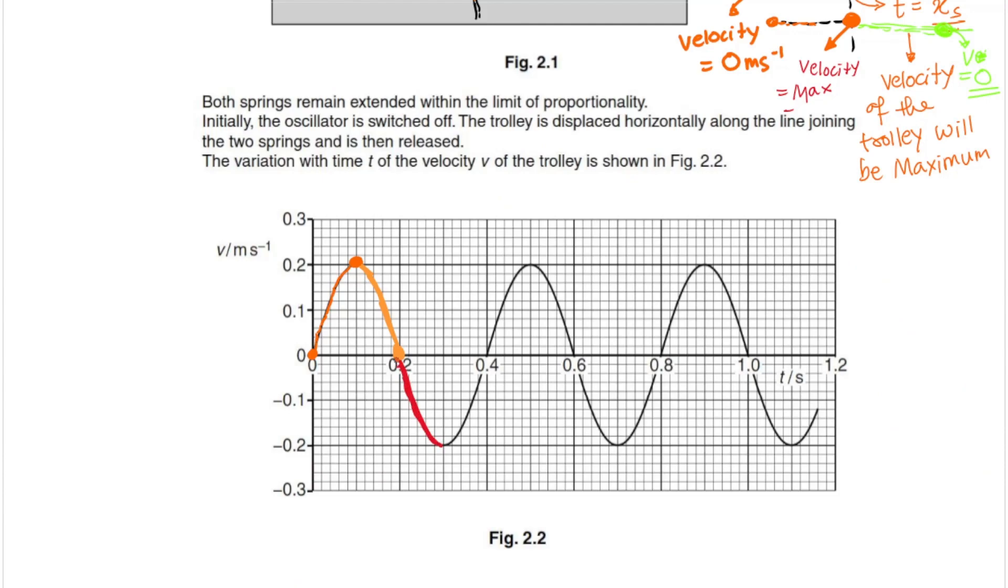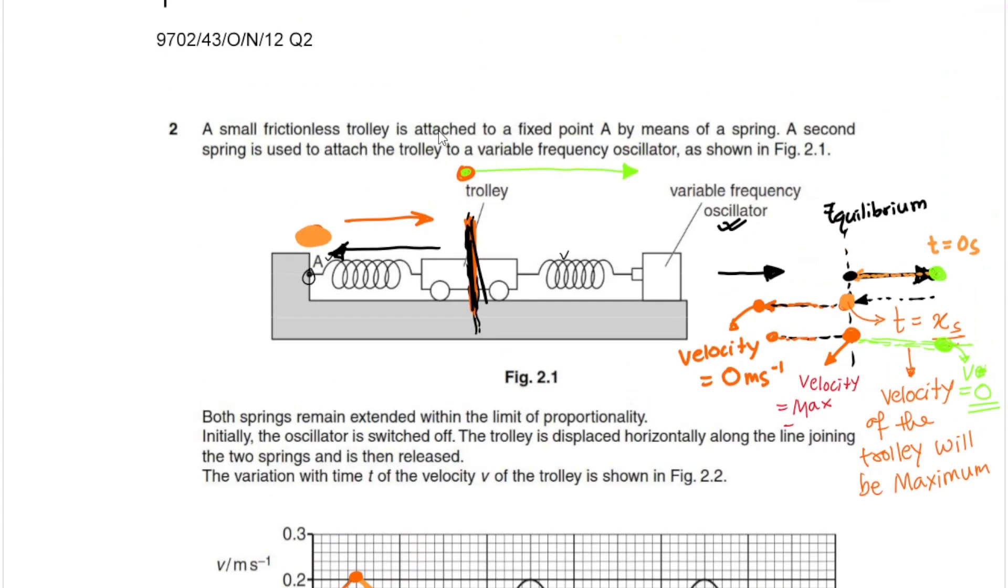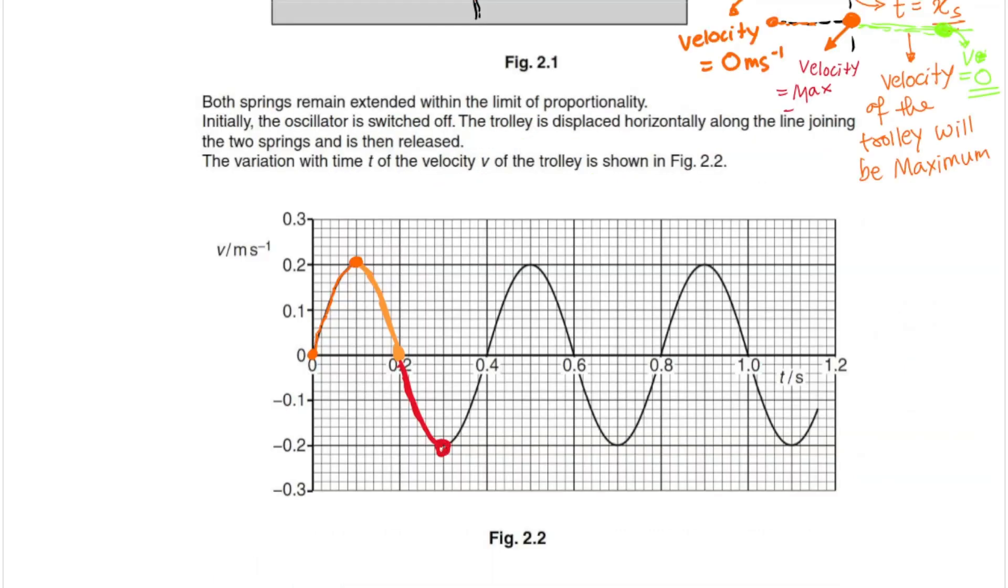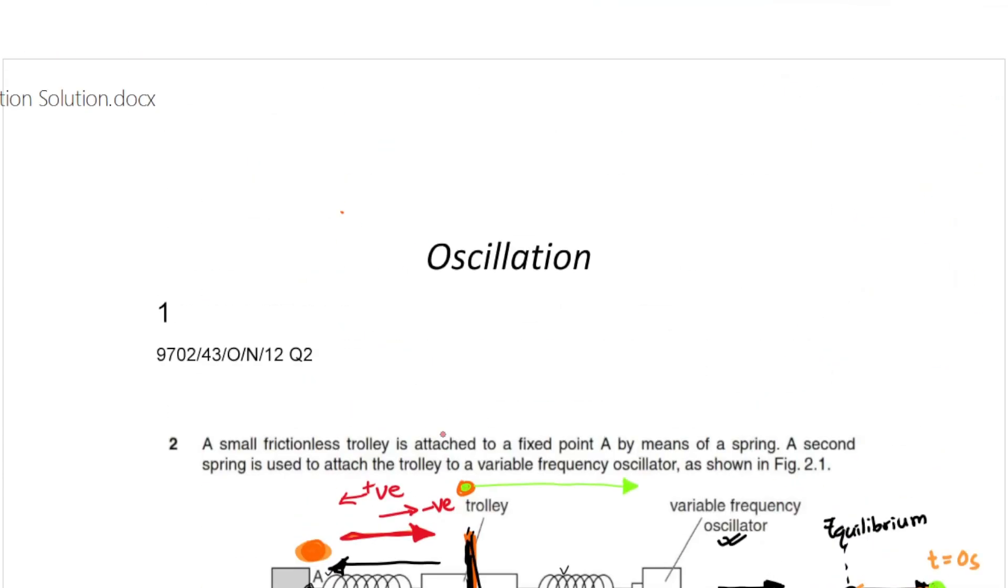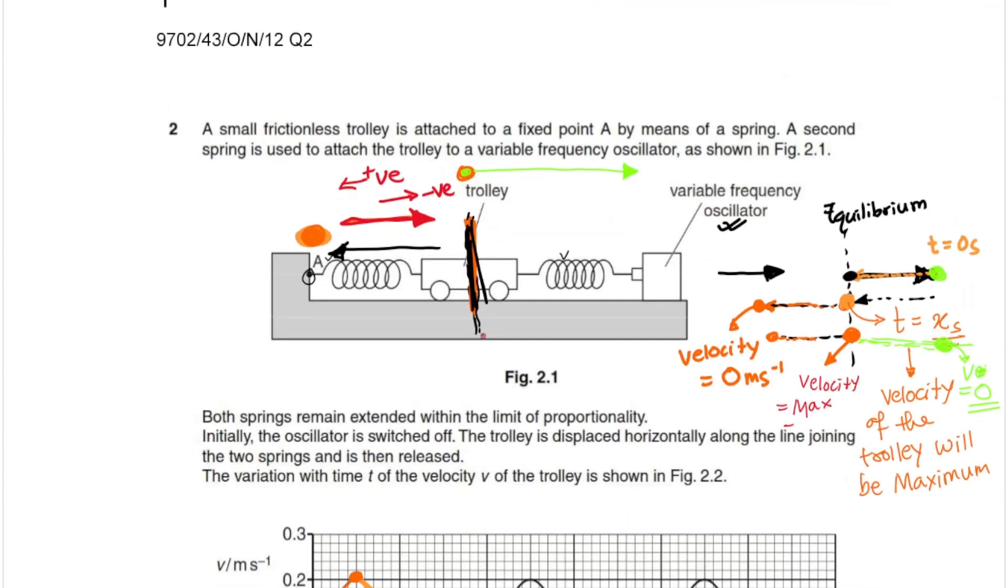Then again it moves back in this direction. Since in this direction we took velocity to be positive, we can say movement in this direction is negative. Then it reaches maximum velocity as it re-approaches equilibrium point, and then it continues to move towards this direction to return to zero velocity.